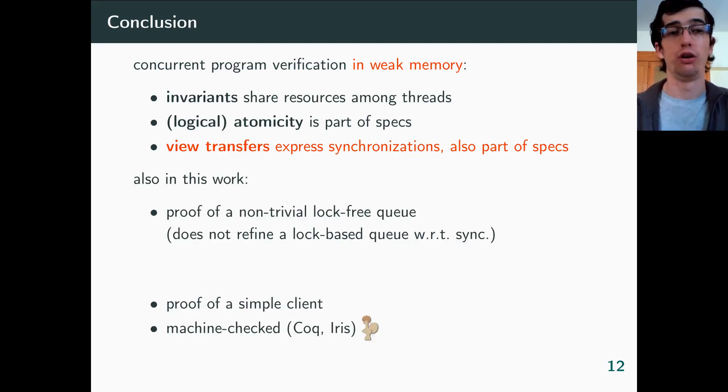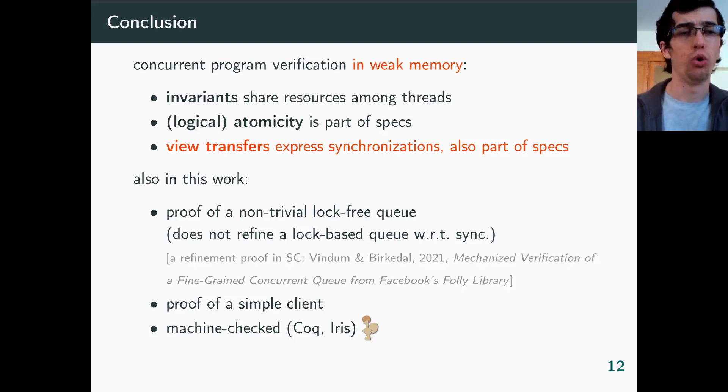I've only talked about specification, but there is more in the paper. We have a proof for a non-trivial lock-free queue. And this proof demonstrates the benefit of our approach, because this implementation has less synchronizations than a lock-based queue. So it's not a refinement. And oh, and by the way, at the time we were working on that proof, other people were working on the refinement proof of a very similar infrastructure under sequential consistency. So you can have a look at the paper too. We also have a proof of a simple client application, which demonstrates that our spec is usable. All of this takes place in Iris, a Coq repo for separation logic framework. And last but not least, by the virtue of Coq, everything is machine-checked.